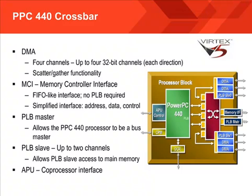These identical multiplexers further select between two DMA controllers and a PLB bus slave target. Recall that masters can also reside on either of the slave PLB buses. The two slave connections to the crossbar are a memory controller interface — that's the MCI port — to a double data rate RAM controller, and the master PLB bus.